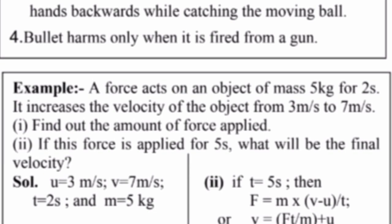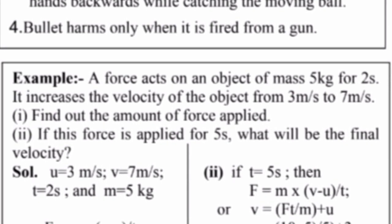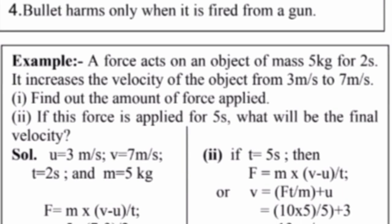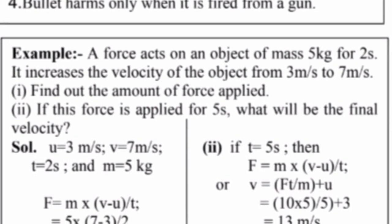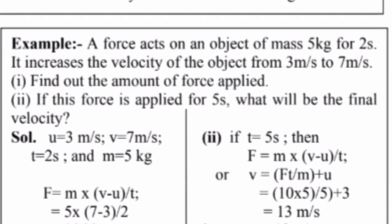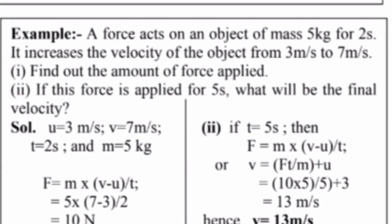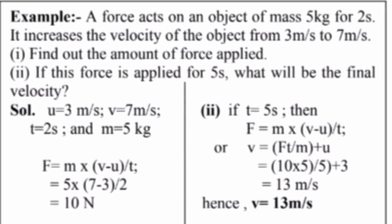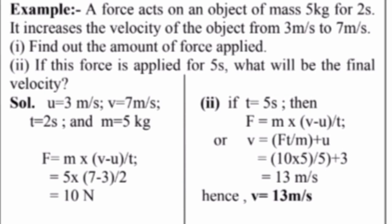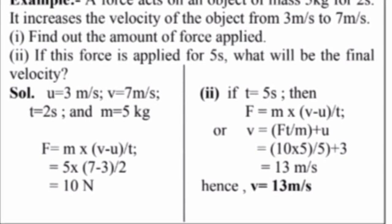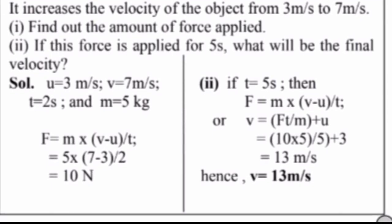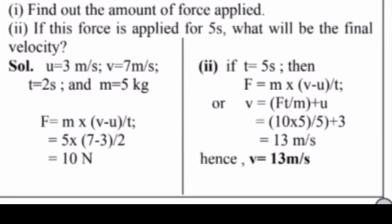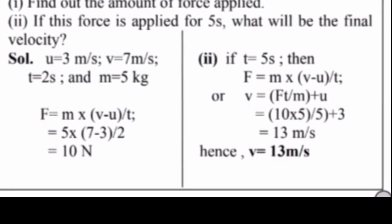Example: A force acts on an object of mass 5 kg for 2 seconds. It increases the velocity of the object from 3 meter per second to 7 meter per second. Find out the amount of force applied. If the force applied for 5 seconds, what will be the final velocity? u equals 3 meter per second, v equals 7 meter per second, t equals 2 seconds, m is 5 kg. The formula of force is F equals m into v minus u upon t. So answer is 10 newton. In second case, t is 5 seconds. Then F equals m into v minus u upon t, and v equals F t upon m plus u. After calculation we have got v equals 13 meter per second.